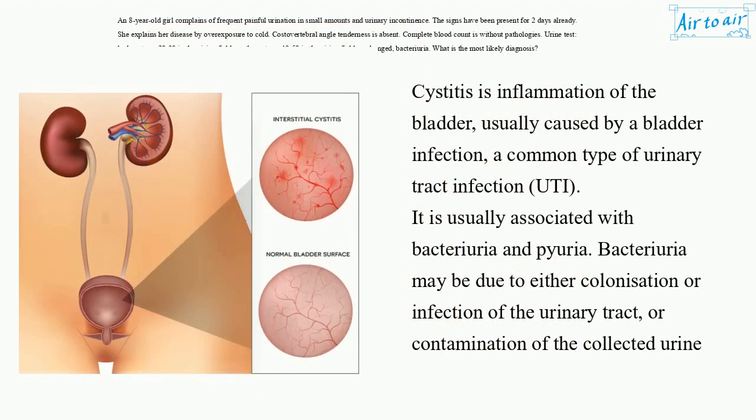Cystitis is inflammation of the bladder, usually caused by a bladder infection, a common type of urinary tract infection (UTI). It is usually associated with bacteriuria and pyuria. Bacteriuria may be due to either colonization or infection of the urinary tract, or contamination of the collected urine specimen.